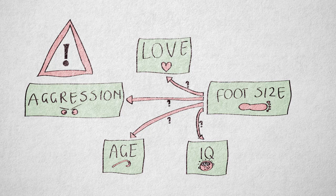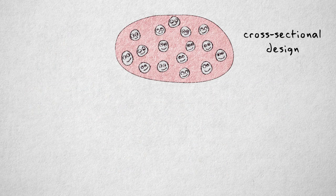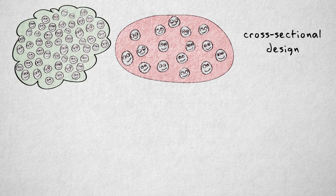Just like with experimental and quasi-experimental designs, there are a couple of standard correlational designs you should be familiar with. First of all, there's the cross-sectional design, in which a cross-section of a population — a usually large group — is considered at one specific point in time.